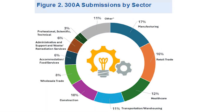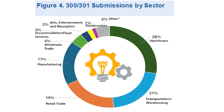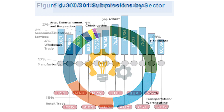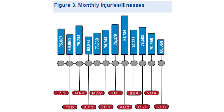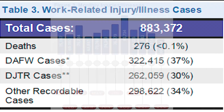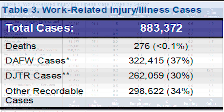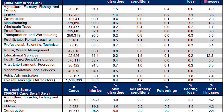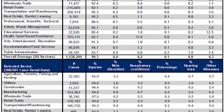Many of the occupational hazards identified in the report are well understood and can often be prevented. Employers, employees, employee representatives, and occupational safety and health researchers can use this report and the data in it to identify patterns of injuries, illnesses, and hazardous conditions in the workplace.